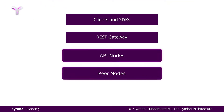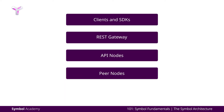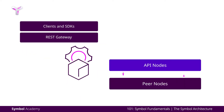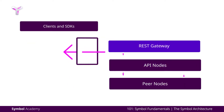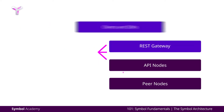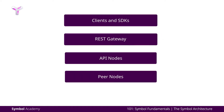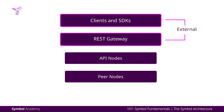The first two tiers are internal tiers that are at the protocol level. The first tier is the core of the blockchain, made up of peer nodes. The peer nodes communicate with API nodes. The REST Gateway is the next tier, which communicates between the API and the clients. The REST Gateway and the client tiers are external tiers that users have more direct interactions with.